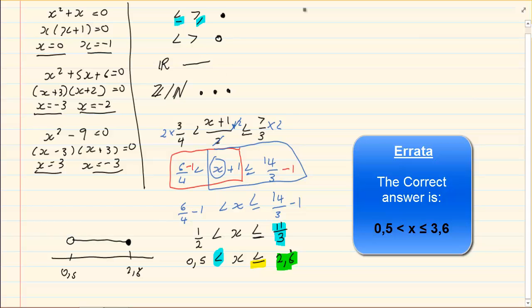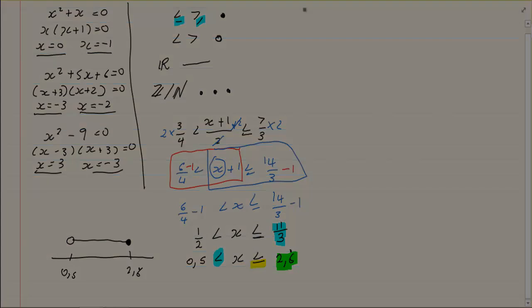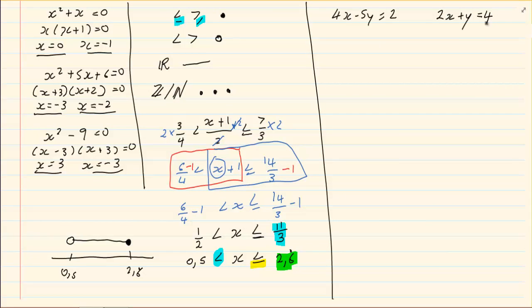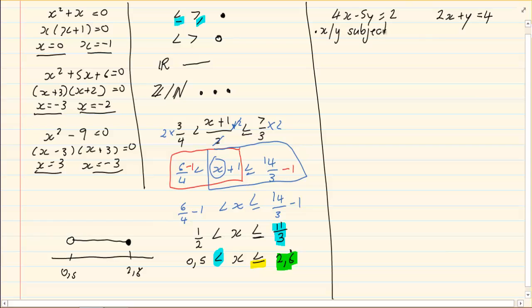The next thing in our summary that we are going to do is simultaneous equations. In simultaneous equations we are going to use the method where we make x or y the subject of the formula. When you are doing this always look at the easier equation. If you have a look at 4x and 5y and then you look at 2x and y, the best one to get alone would be the y in the second equation. If we make y the subject of the formula we have y is equal to 4 minus 2x.